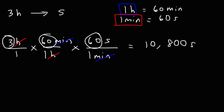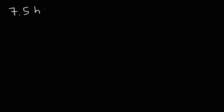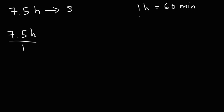That gives us 10,800 seconds. So that's how we can convert from hours into seconds. Now let's work on another example for practice: convert 7.5 hours into seconds. Based on the last example, go ahead and try this one. We start with 7.5 hours and write our conversion factors: one hour equals 60 minutes, and one minute equals 60 seconds.